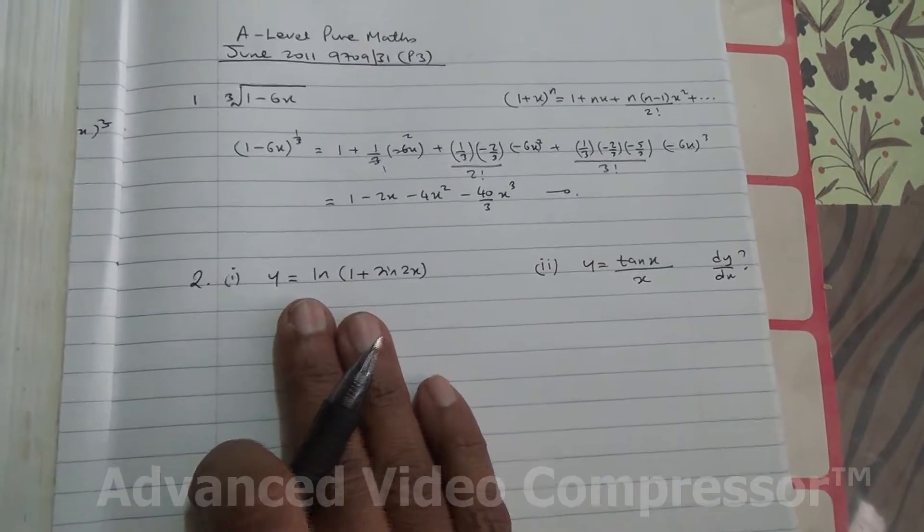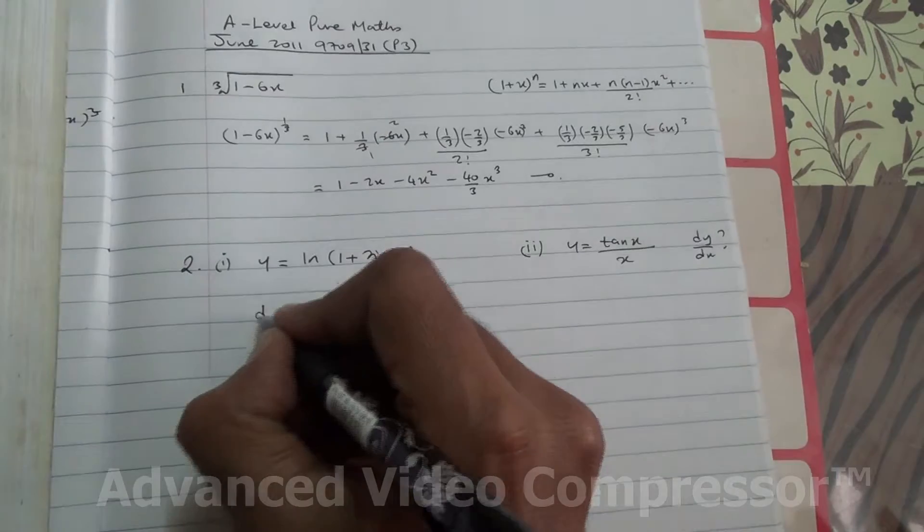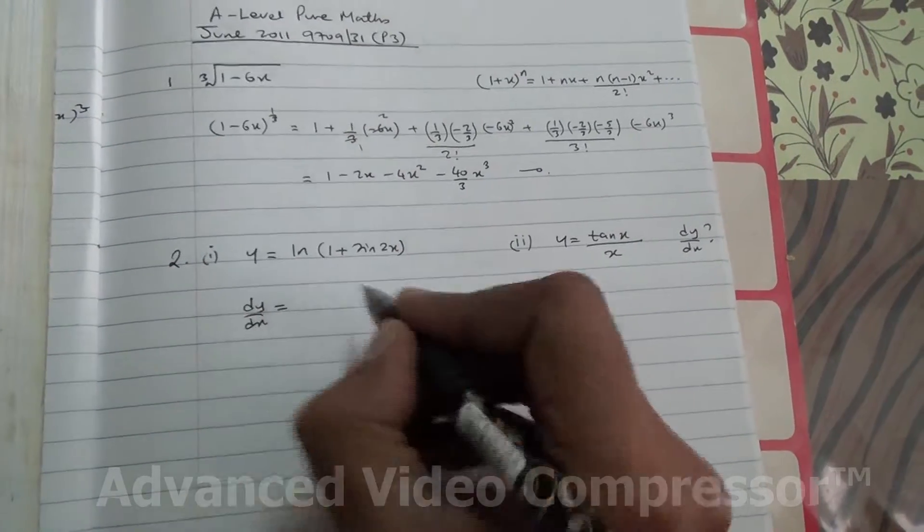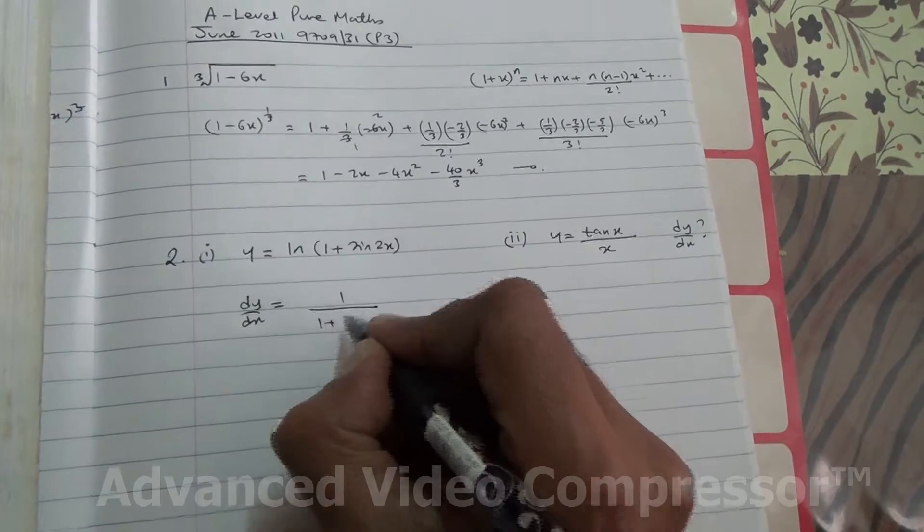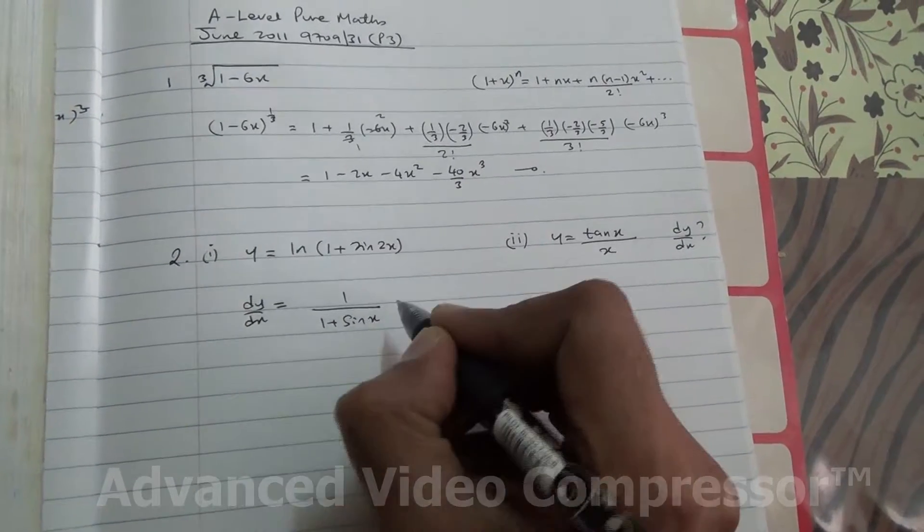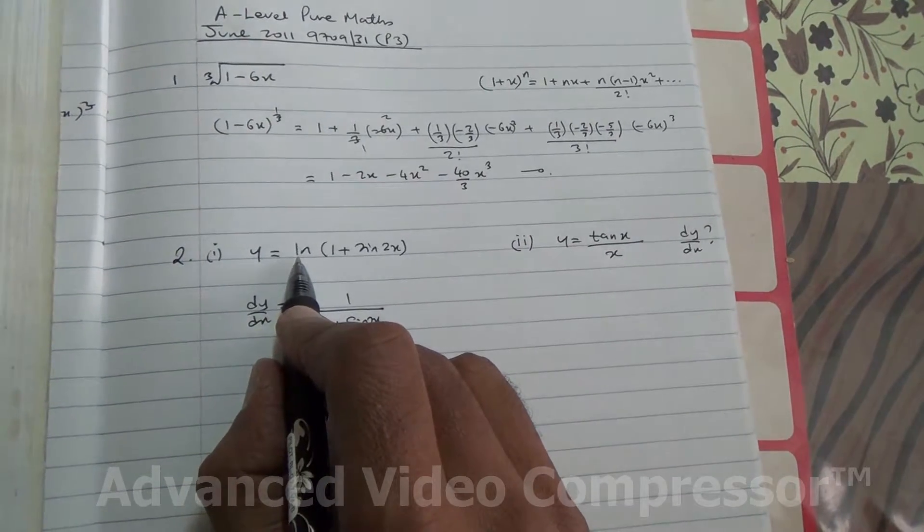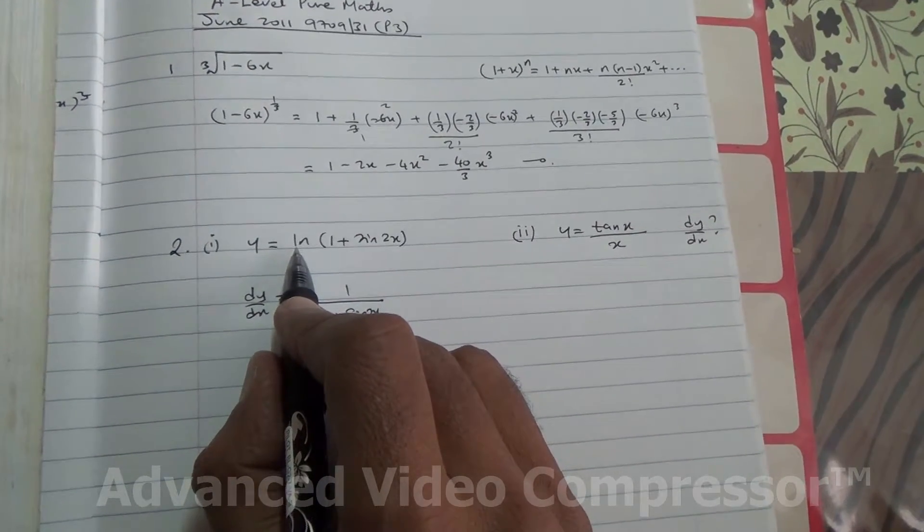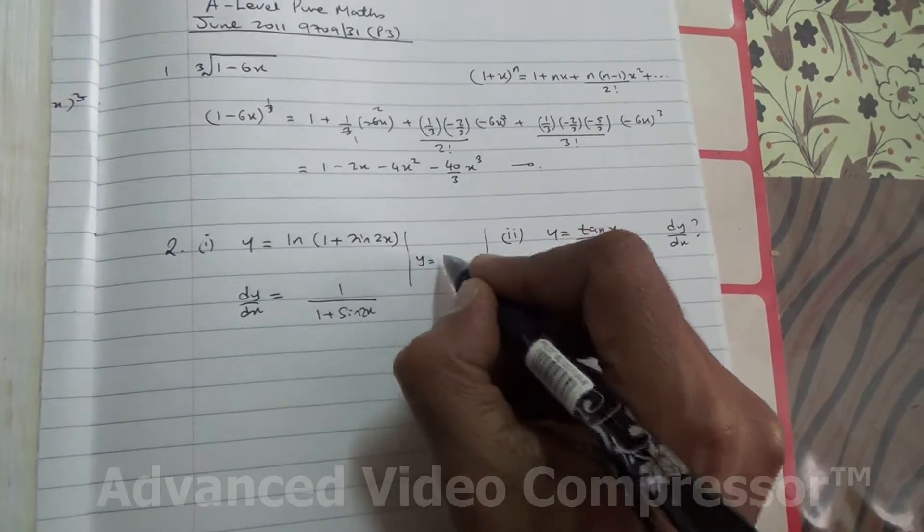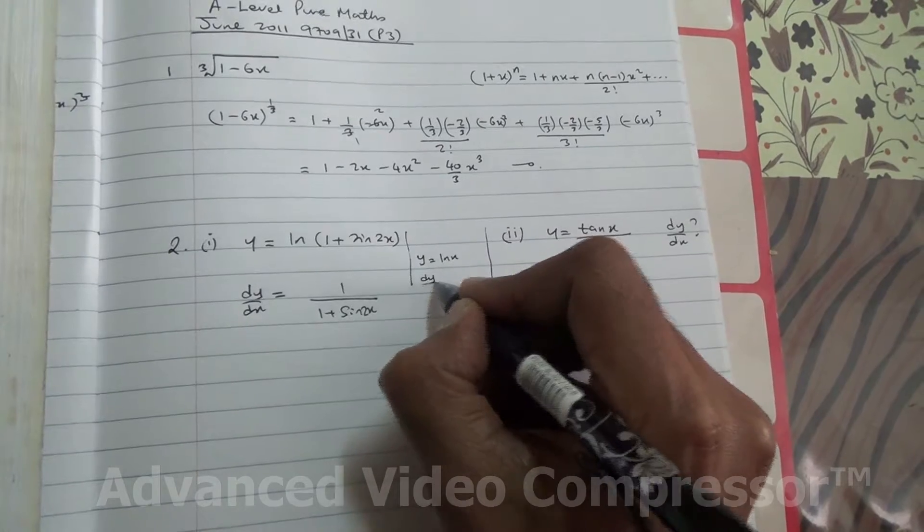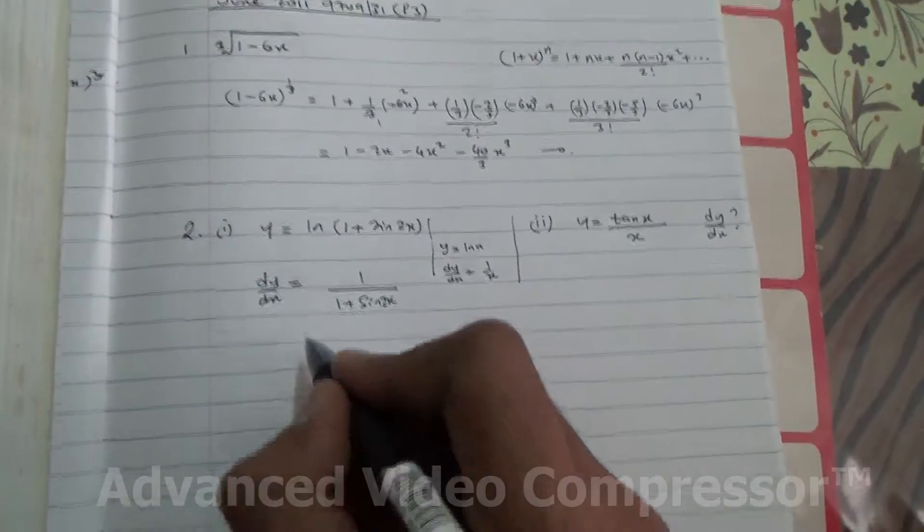Let us look at the first case. We have to find dy by dx. Now, we know that dy by dx will simply become 1 over 1 plus sin of 2x, because we are differentiating a natural logarithm. We should remember that if y equals ln x, then dy by dx equals 1 over x, which is the case.